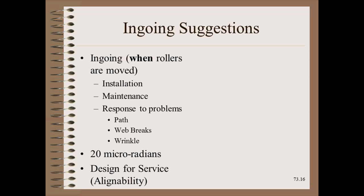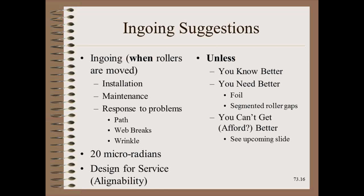Let us summarize the easier of the two criteria: ingoing standards. Several situations might cause people to decide that a roller needs to be moved — during installation, maintenance, or in response to an operational problem such as path variation, web breaks, or angled wrinkles. When we choose to move a roller, we might consider 20 micro-radians, since it is easy enough to achieve in most cases if the machine was designed to be easy to align. General rules come with exceptions: if you prefer gyroscopes that can only achieve 40 micro-radians and you know that is more than good enough, that is acceptable. Another exception is if a roller can't practically be moved to such precision due to design issues such as looseness.